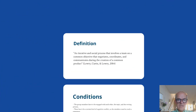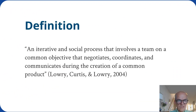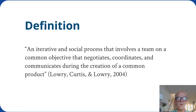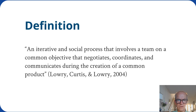First, a definition. Collaborative writing is an iterative and social process that involves a team working on a common objective — they negotiate, coordinate, and communicate during the creation of a common text. We know the original Flower and Hayes model, discussed in the module on memory and cognition, where planning and organizing ideas and revising are different and important steps in the process of creating a text. These processes are also embedded in group work, as the group negotiates and coordinates during the creation of a common product.